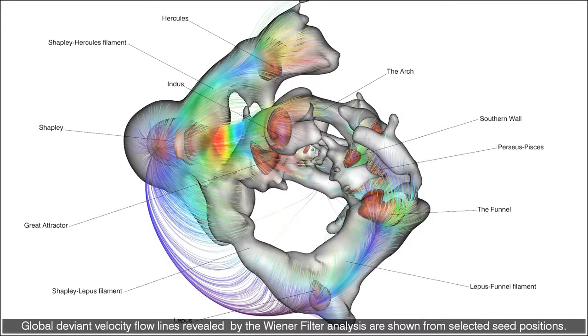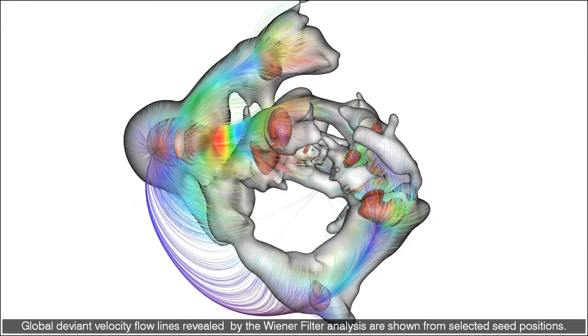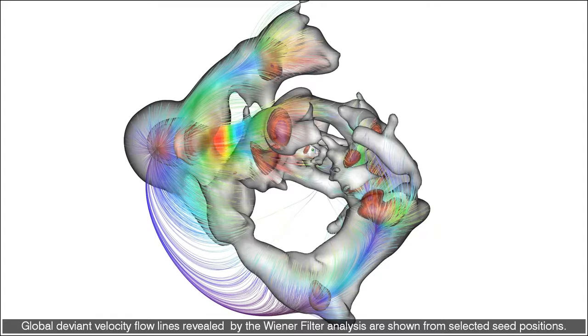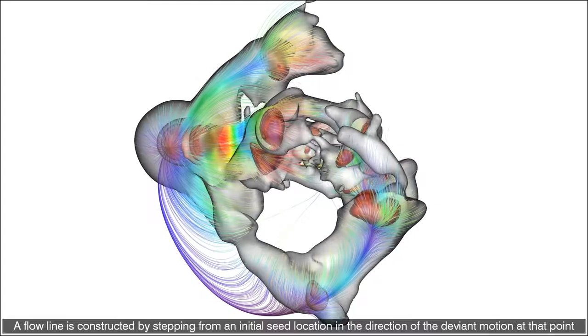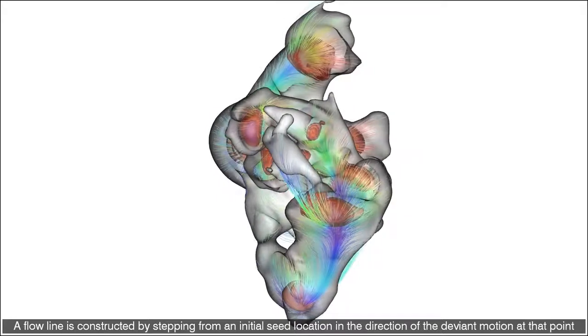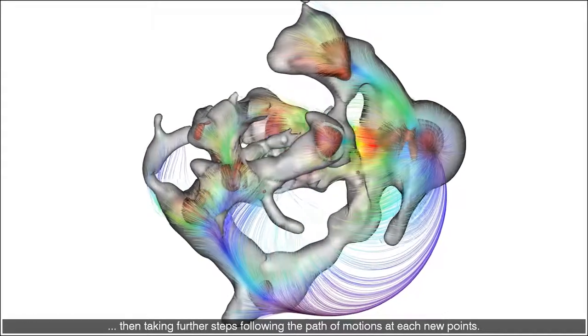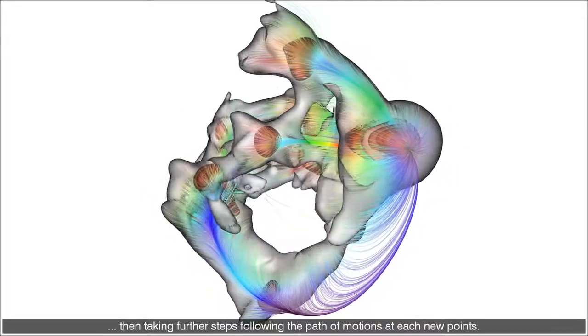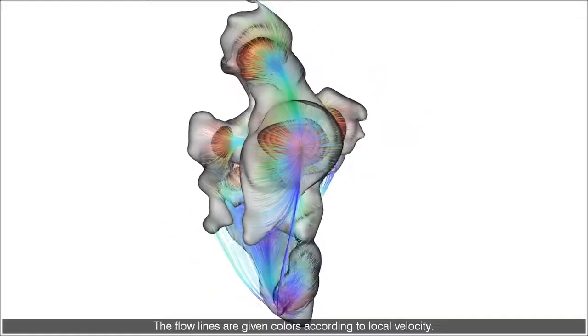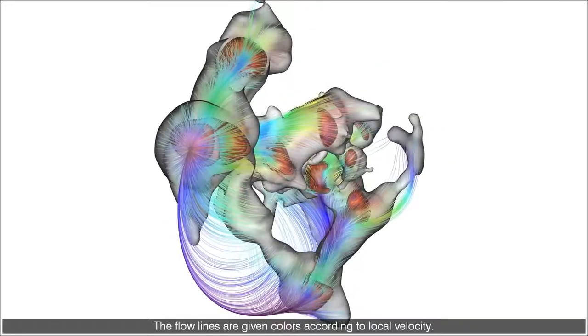Global deviant velocity flowlines revealed by the Wiener filter analysis are shown from selected seed positions. A flowline is constructed by stepping from an initial seed location in the direction of the deviant motion at that point, then taking further steps following the path of motions at each new point. The flowlines are given colors according to local velocity.